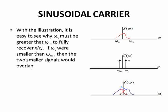With the illustration, it is easy to see why omega c must be greater than omega m to fully recover x of t. If omega c were smaller than omega m, then the two smaller signals would overlap.